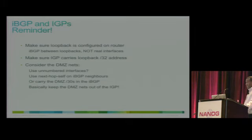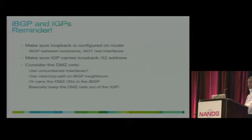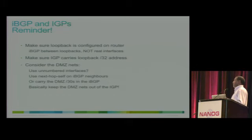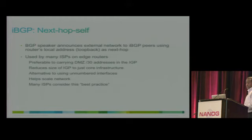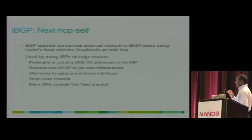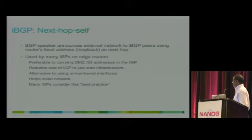The DMZ networks — networks that connect your network to your peer, either a customer or another service provider — can be injected using IBGP, but if you do that you have to use next-hop-self. By default, BGP speakers announce external networks to IBGP peers without changing the next-hop (which is the directly connected interface or the peering IP address). But that's not recommended — it's better to override that with next-hop-self, and this is used by most service providers.